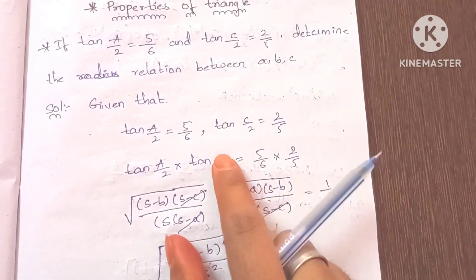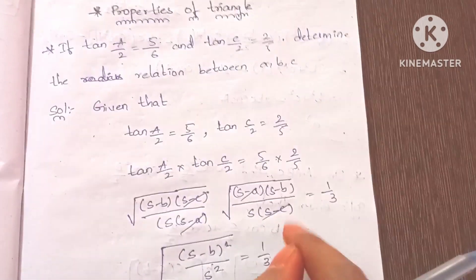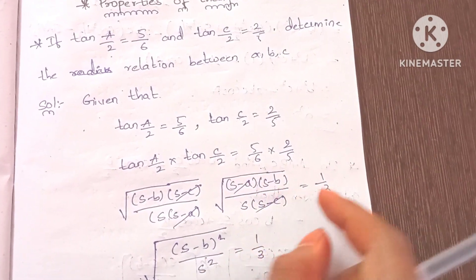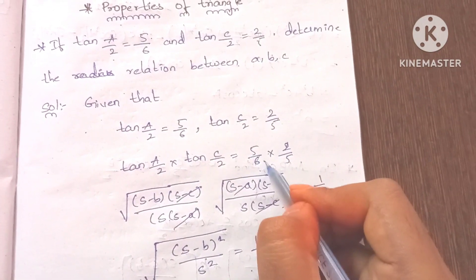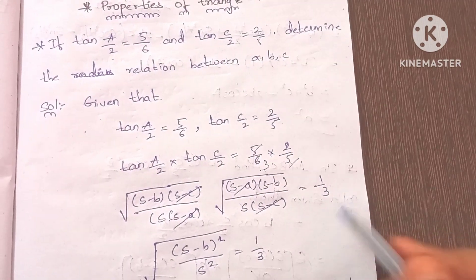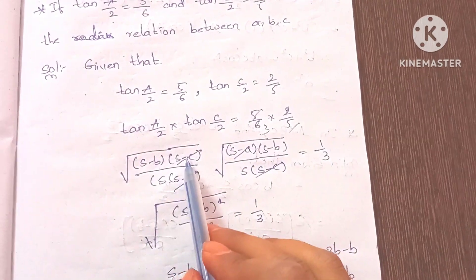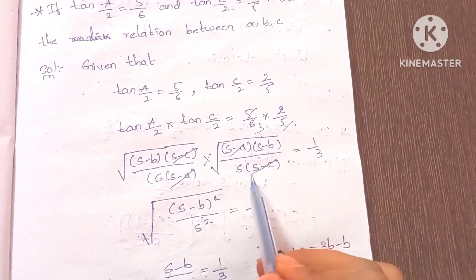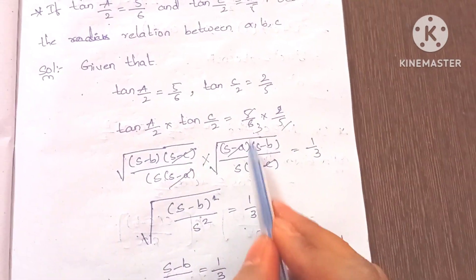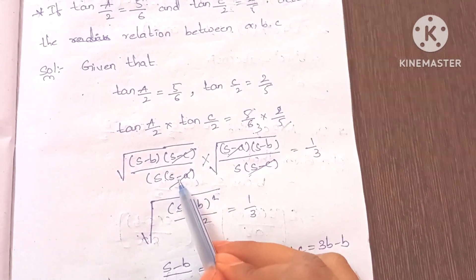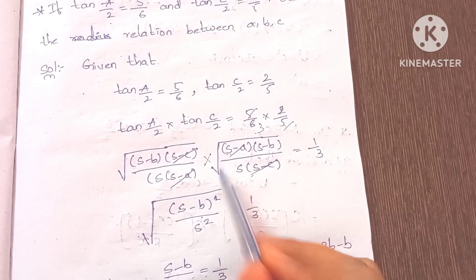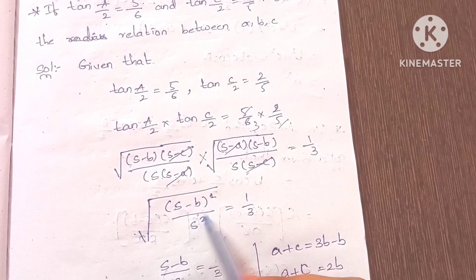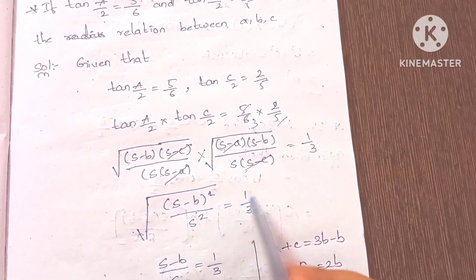So under the root, we choose s-c and s-c terms. This is multiplied together. We will cancel the denominator. We have the root of s-a here, and the root of s-a here, so these cancel. The s-b terms form s-b whole squared by s squared, which is equal to 1/3.